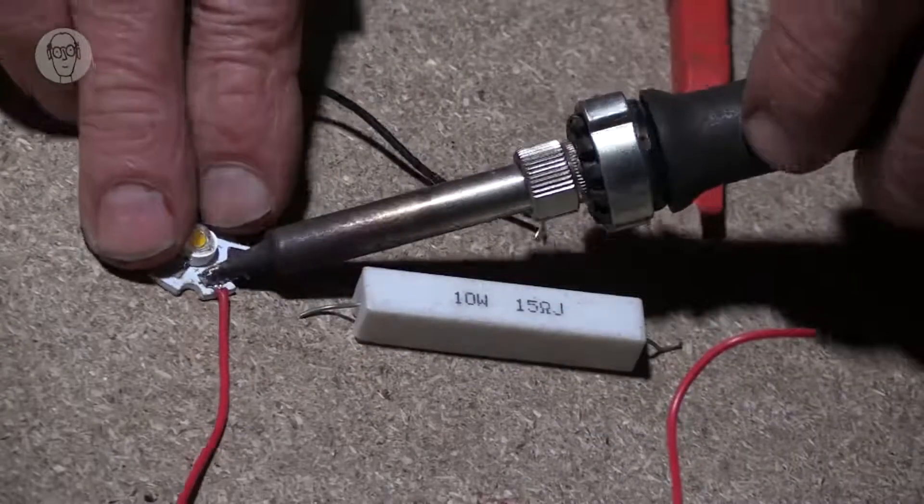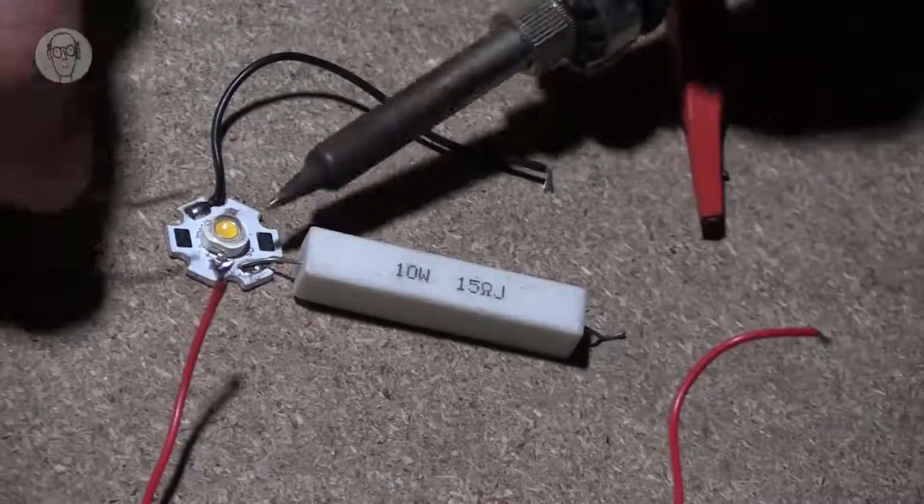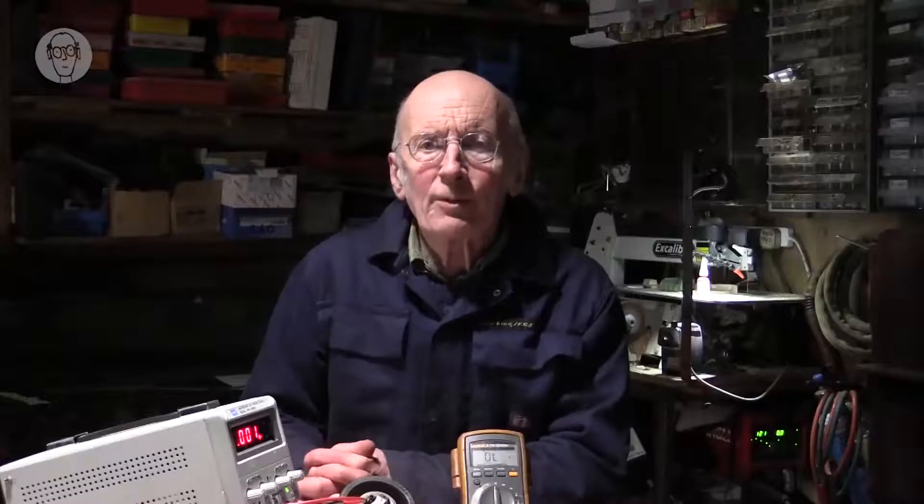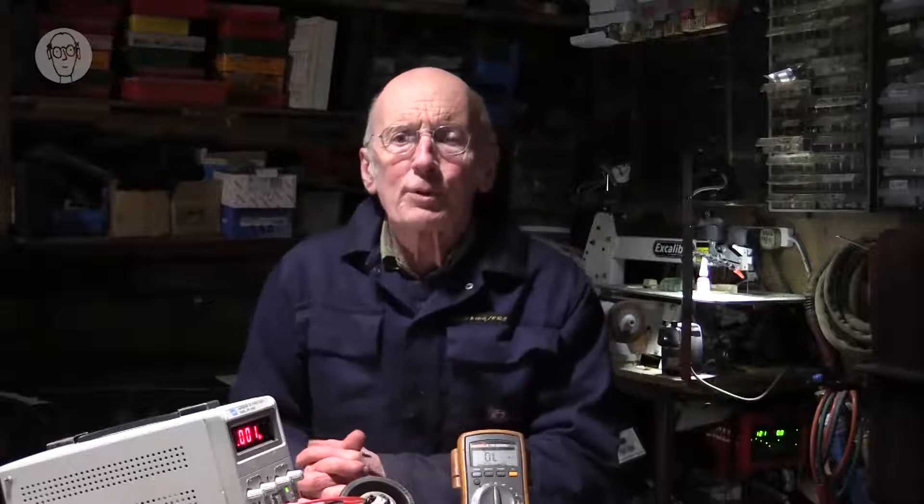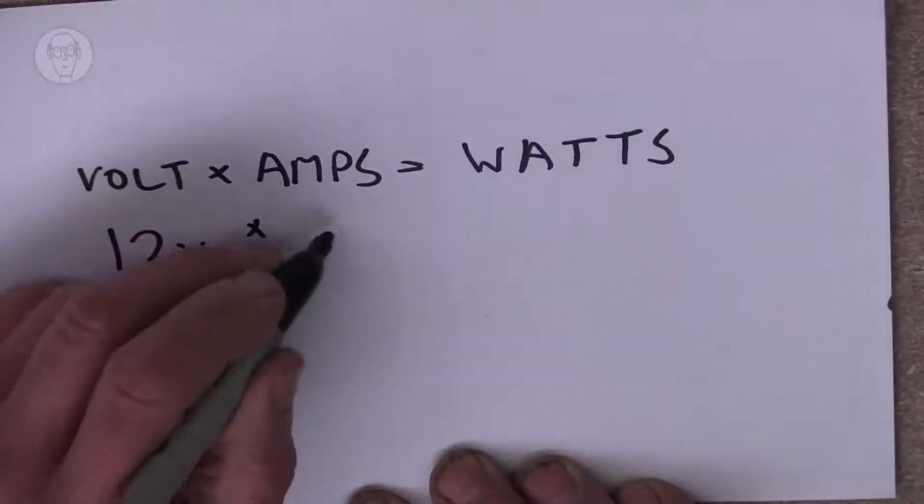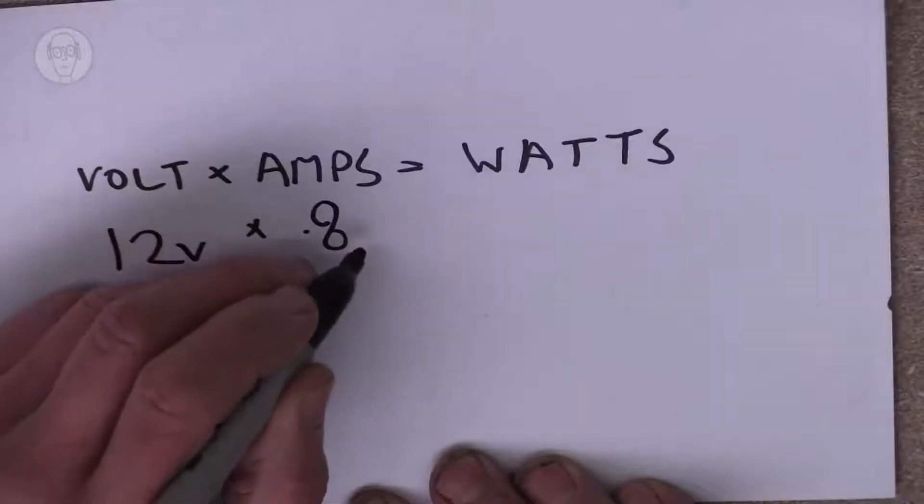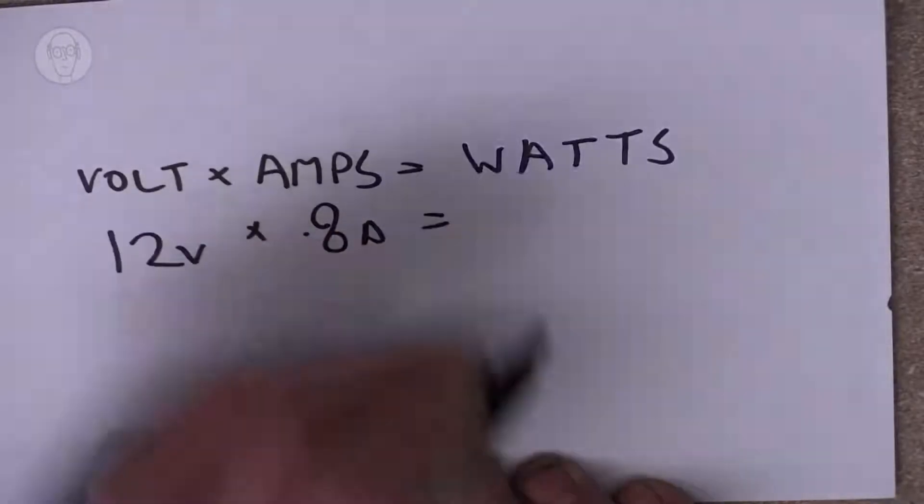The final resistor has to be a power resistor to dissipate the heat. The power of resistors is measured in watts, which is amps times volts, so for 800 milliamps and 12 volts, that's about 10 watts.